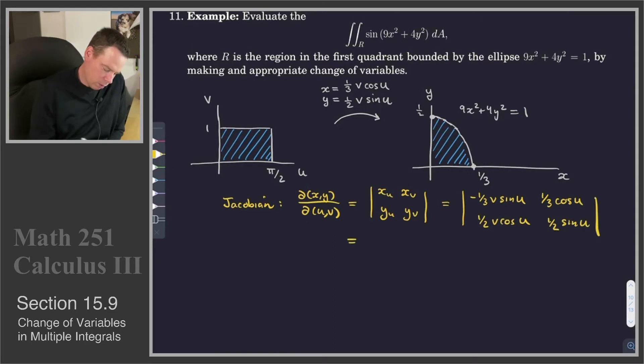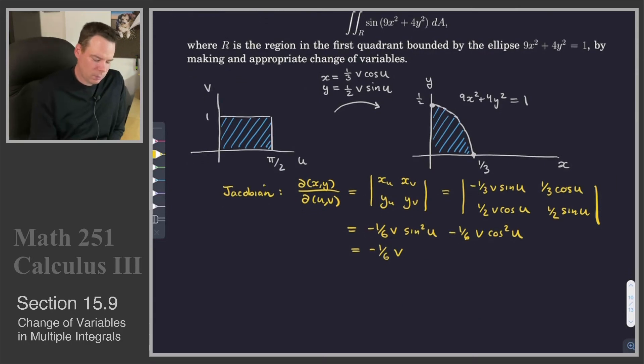The determinant of that is -1/6 v sin²u - 1/6 v cos²u. And since sin²u + cos²u = 1, this becomes -1/6 v. And then when I use it in the integral, I'm going to have to take the absolute value of it, so that'll strip off the negative sign.